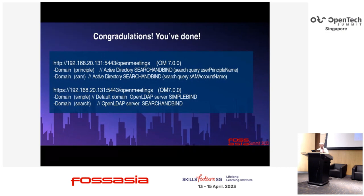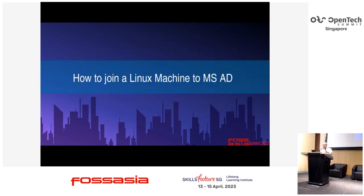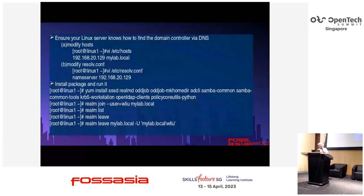After that, you can see the configuration is done — pretty simple. Then, how to join this machine to MS-AD? It's not too complicated, only a few steps. First, ensure your native server knows how to find the domain controller via DNS.